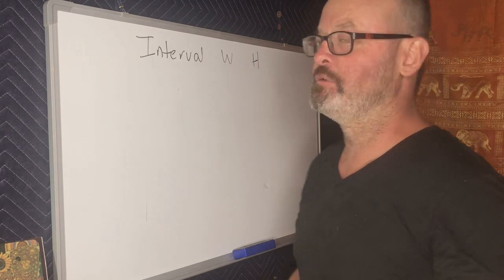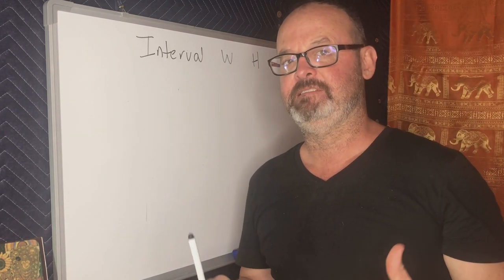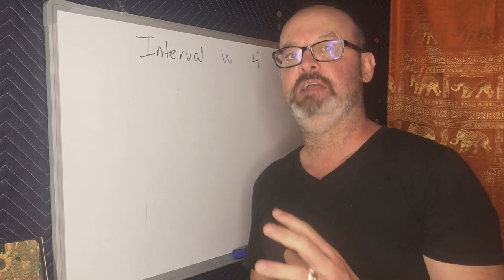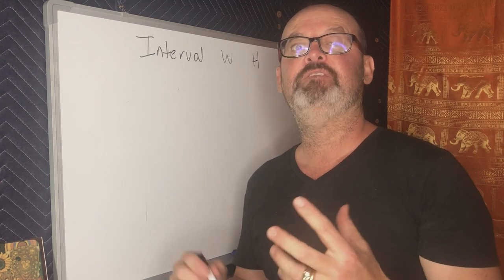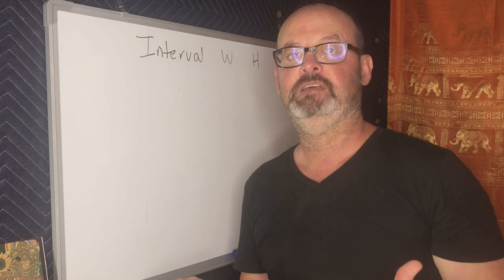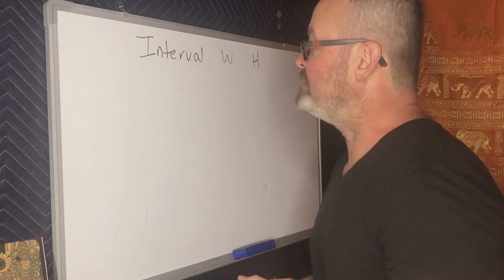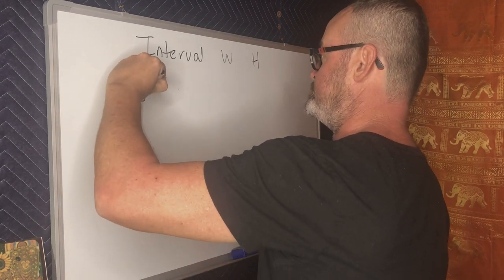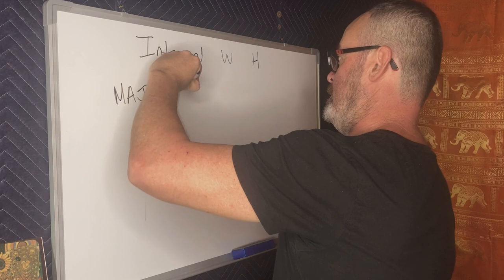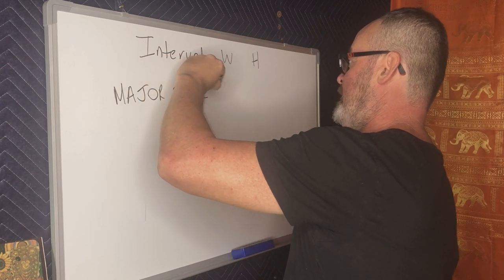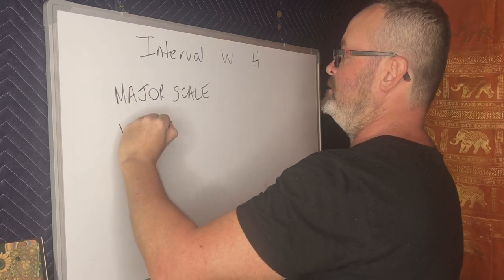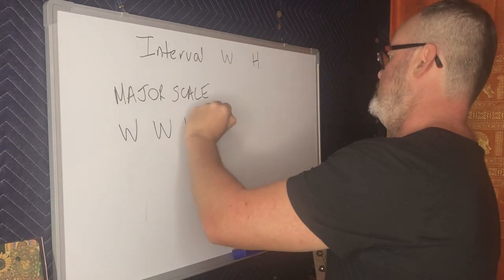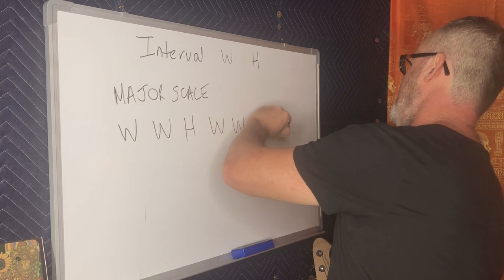What we need to now understand is that there is a formula for how we write a major scale. In music, we're going to have 12 major scales because there's 12 keys that we're dealing with. Let's write out this formula for the major scale. It looks like this: whole, whole, half, whole, whole, whole, half.